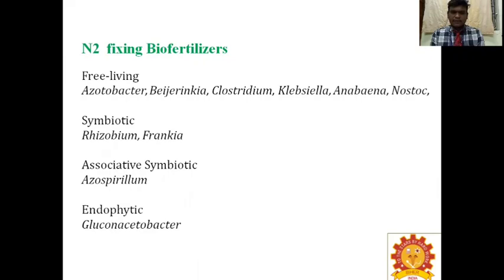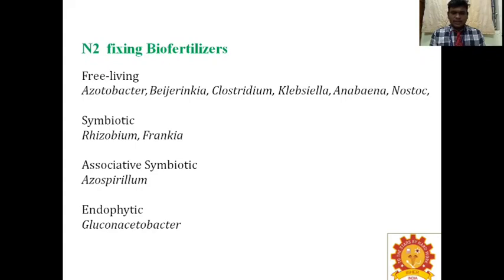Gluconacetobacter is present only in crops having sucrose content above 30%. For free-living nitrogen-fixing bacteria, you should collect rhizosphere soil — soil around the root surface. For symbiotic, you collect root nodules. For associative symbiotic, collect samples from the rhizoplane region — soil adhering to root particles. For endophytic, collect any parts such as leaf, sugarcane juice, or sugarcane buds to isolate Gluconacetobacter.